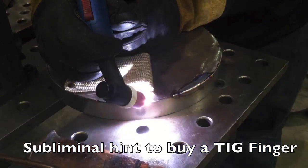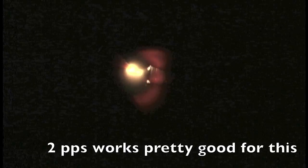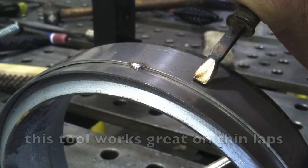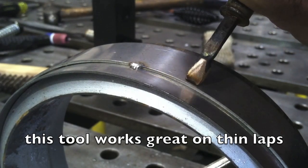And here's a subliminal hint to buy a TIG finger. Two pulses a second worked pretty good for that outside corner joint. It wrapped those corners around but didn't really penetrate much and didn't bring much oxidation into the puddle.